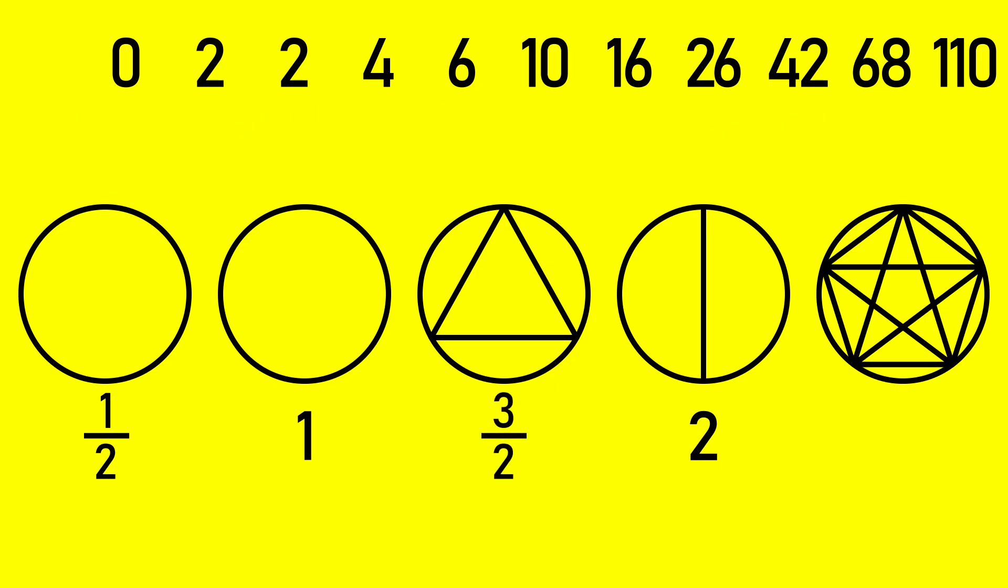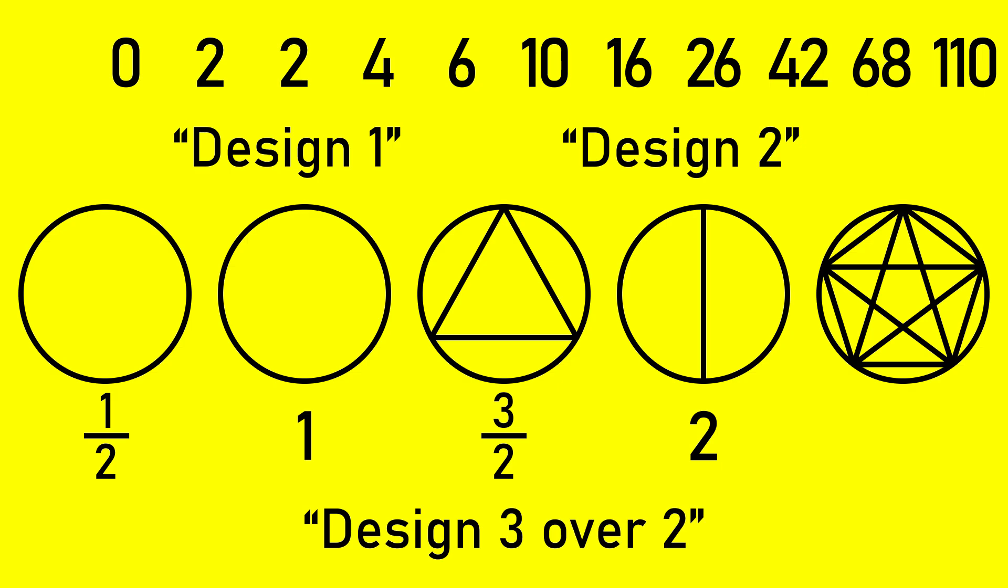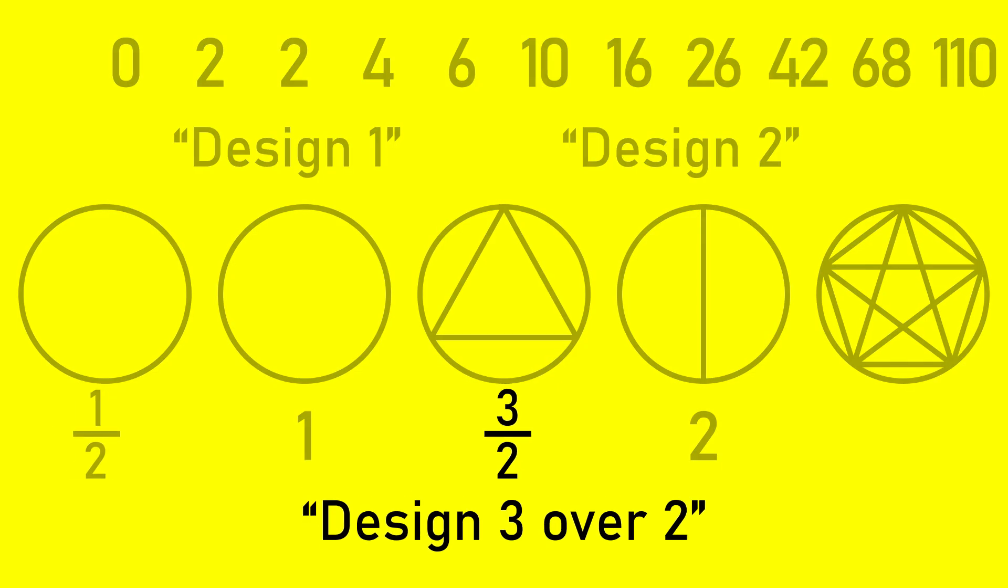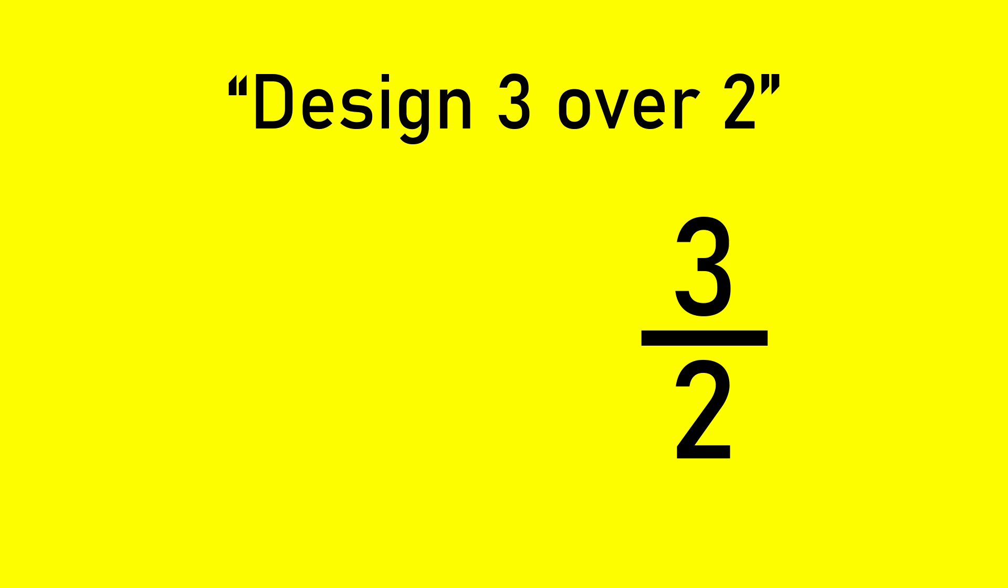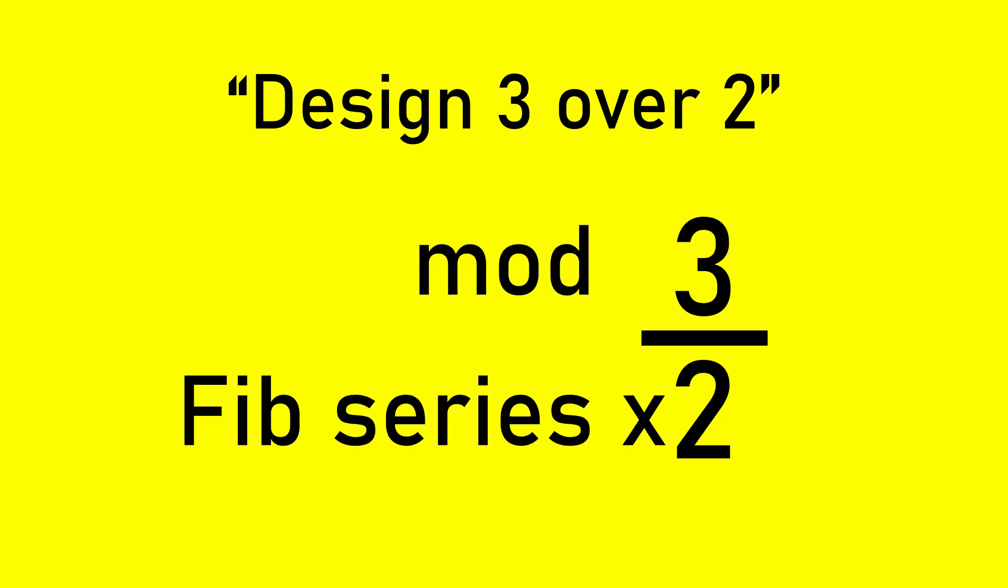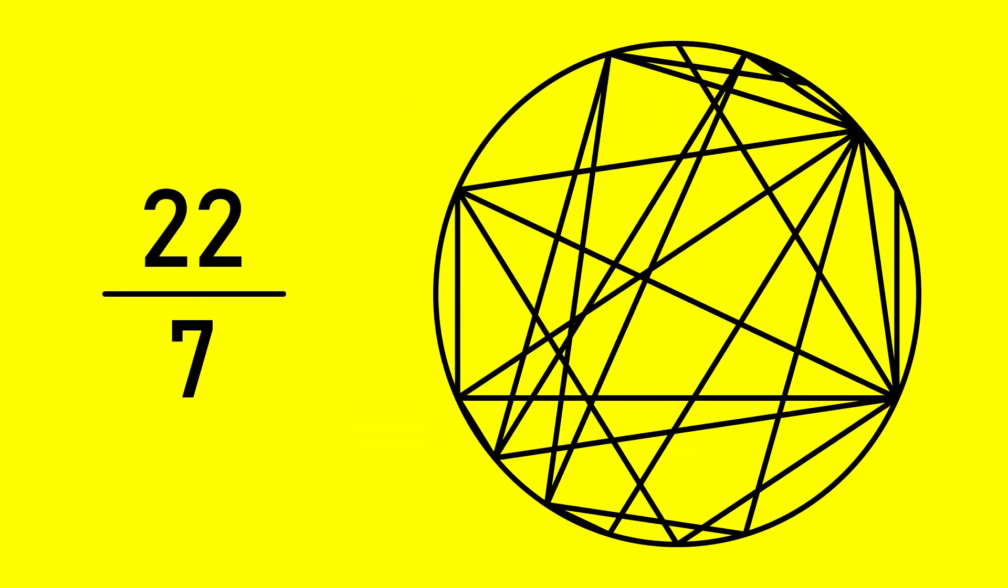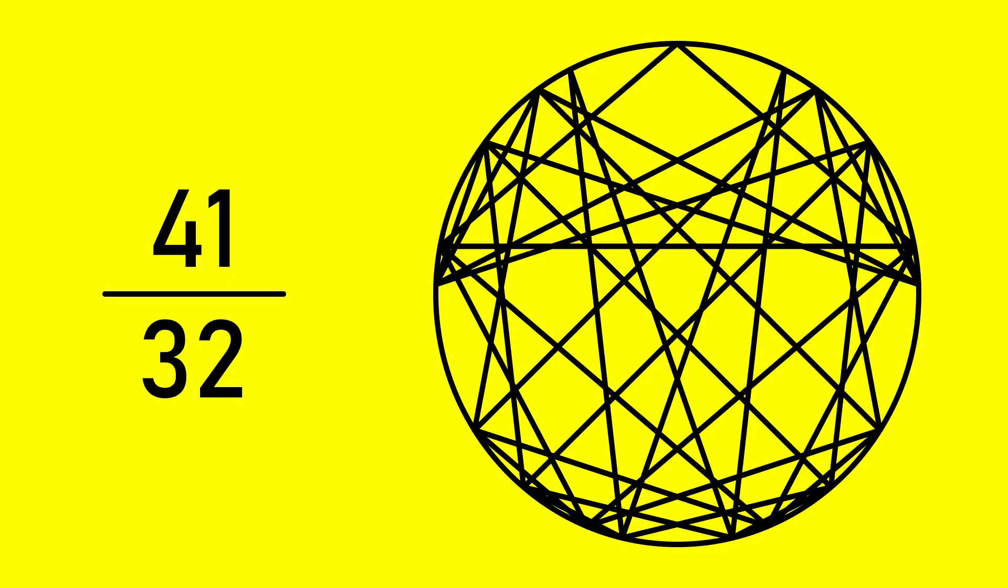Instead, I think it's better to label these designs more like design 1, design 2, design 3 over 2, etc. to remove a bit of faulty connotation. In this designation, the top number is the modulus used, and the bottom number is the multiplier of the original Fibonacci series. And with an infinite amount of integers available, we can basically make as many designs as there are rational numbers.